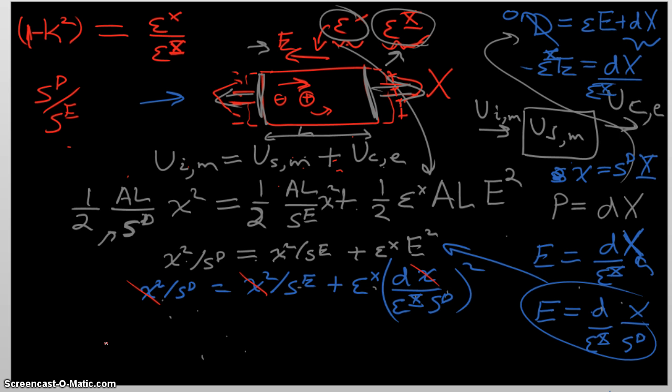Now we can cancel out these x squared terms. And we have the equation. And let's divide everything through. So we have 1 over SD equals 1 over SE plus Epsilon X over Epsilon X capital, multiplied by, sorry, that's squared. Epsilon X, D over Epsilon under constant stress, and all of this is squared. So this is the relationship we have now.